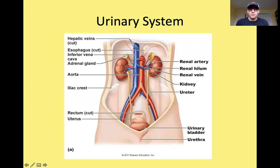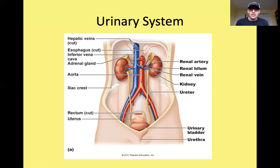The urinary system sits in the abdominal pelvic cavity. The kidneys are along the dorsal wall of the abdomen towards the back of the body. The adrenal glands sit right on top of the kidneys. The renal artery brings blood to the kidneys, and the renal veins drain blood away, branching off the abdominal aorta and draining into the inferior vena cava. The ureters drain urine from the kidneys down to the urinary bladder, which sits anterior to the uterus and vagina in females and anterior to the rectum in males. The urethra then drains urine from the body.